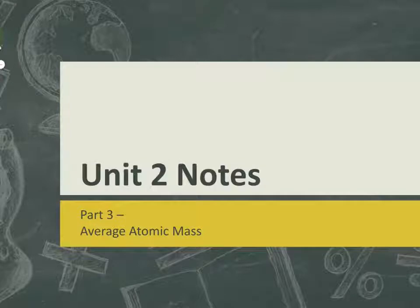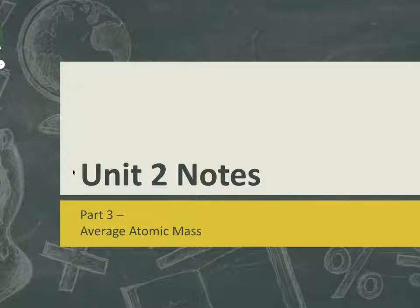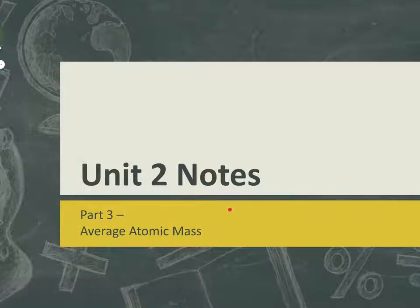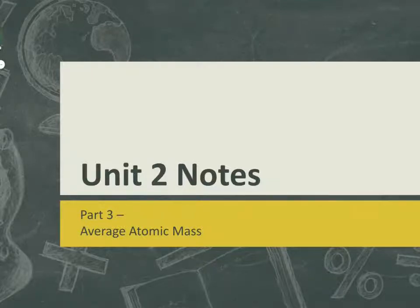Today we are going to talk about the reason why the masses on the periodic table are not whole numbers, and something called the average atomic mass. We're going to learn about average atomic mass and how to calculate it today. We're going to get into math and do some calculations. This can get a little complicated if you're not paying attention, so make sure you follow along with the examples.